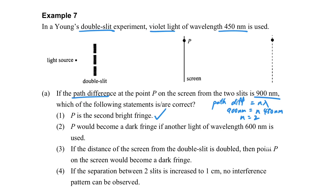Next, we consider whether P will become a dark fringe if the wavelength is changed. Using the same equation with lambda changed to 600 nm, we calculate n equals 1.5. Since 1.5 is between the first and second order, this corresponds to a dark fringe.